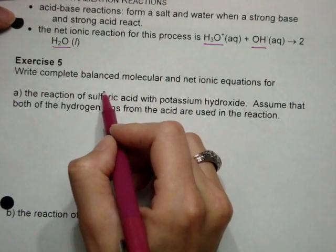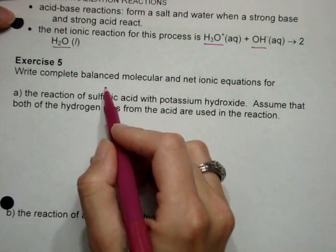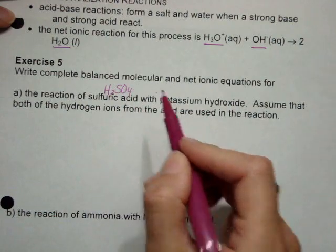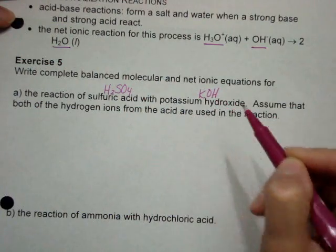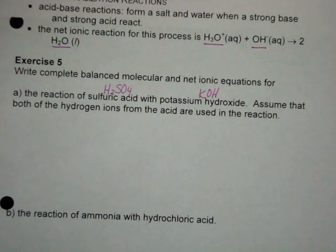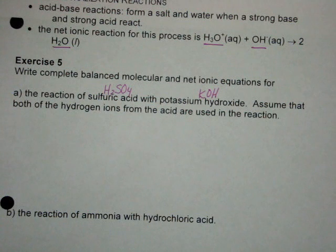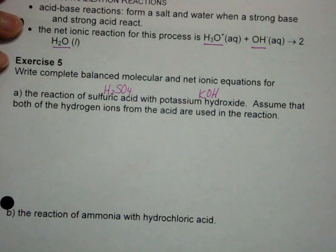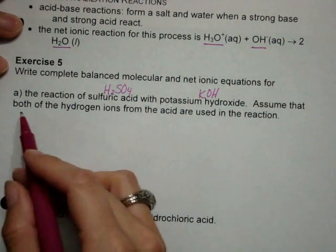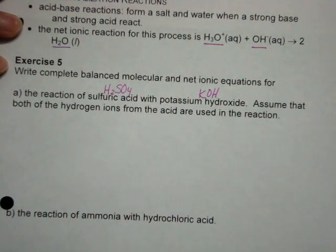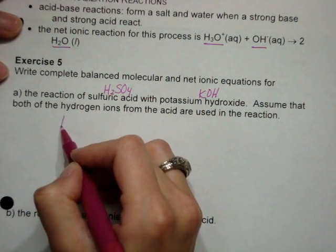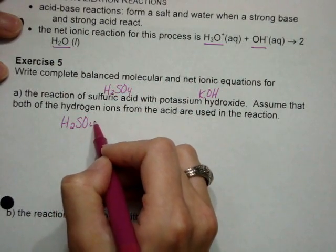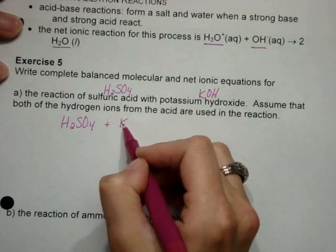First one is the reaction of sulfuric acid, so that's H2SO4, with potassium hydroxide, so that's KOH. The first thing we have to look for is, are both of these strong acids or strong bases? And in this case, the answer is yes. And it also says assume that both of the hydrogen ions from the acid are used in the reaction. So that's actually unusual, but we'll go for it for now.